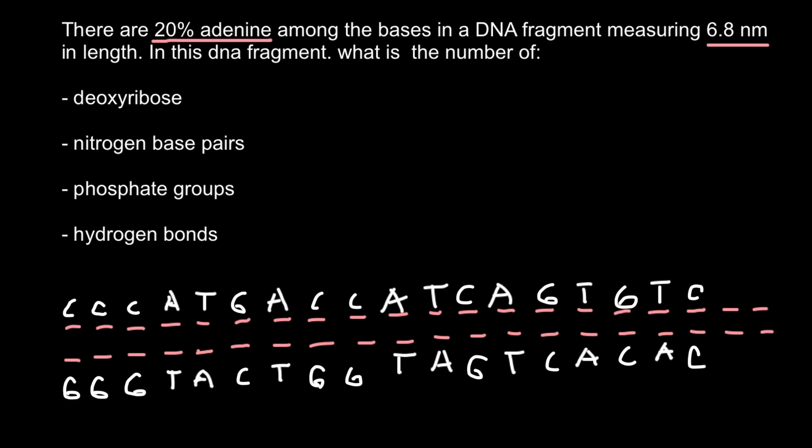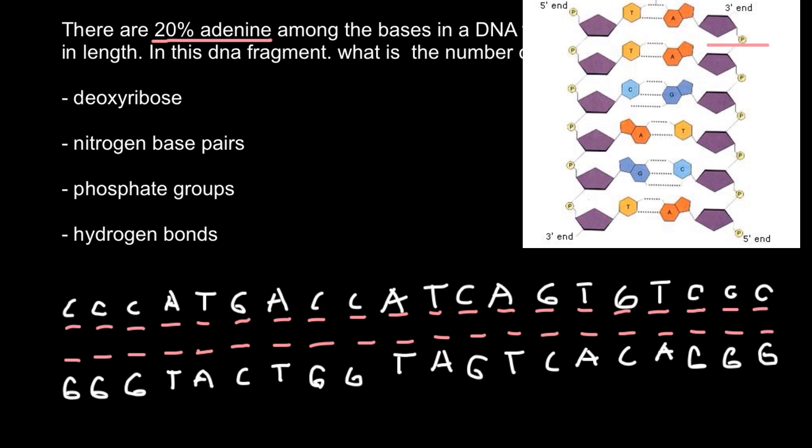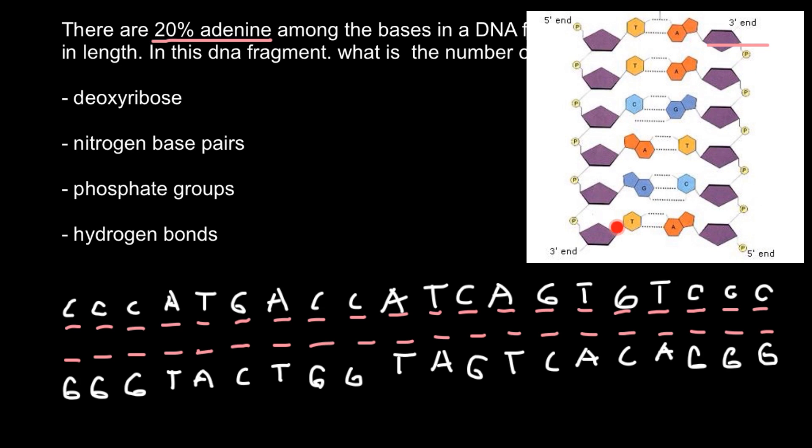And these two bases make another 60 percent. So total number of bases is 40. So now we can answer our questions. So the first question is what is the number of deoxyribose here? Once again, if we return to this picture...